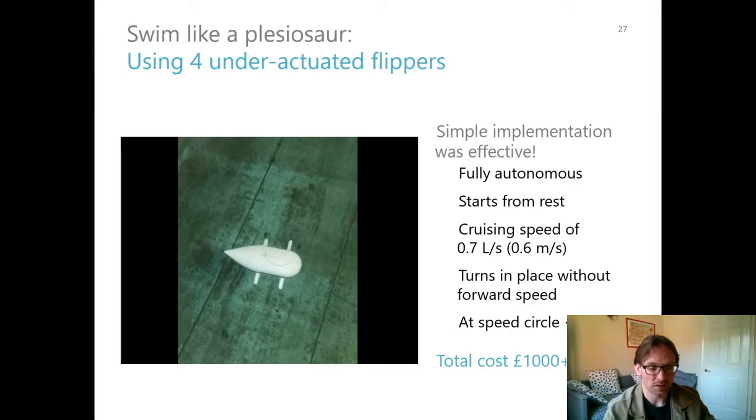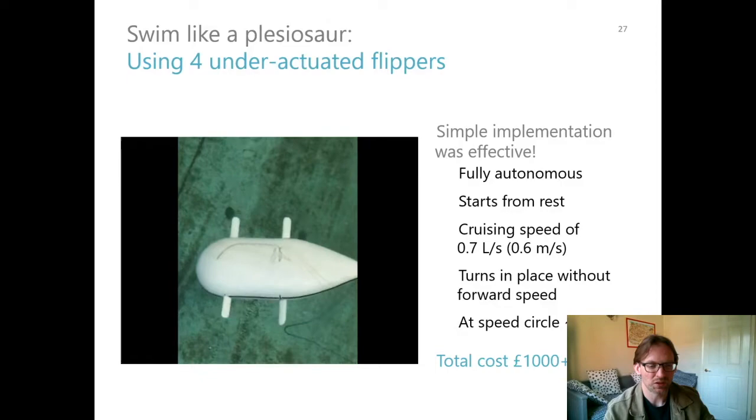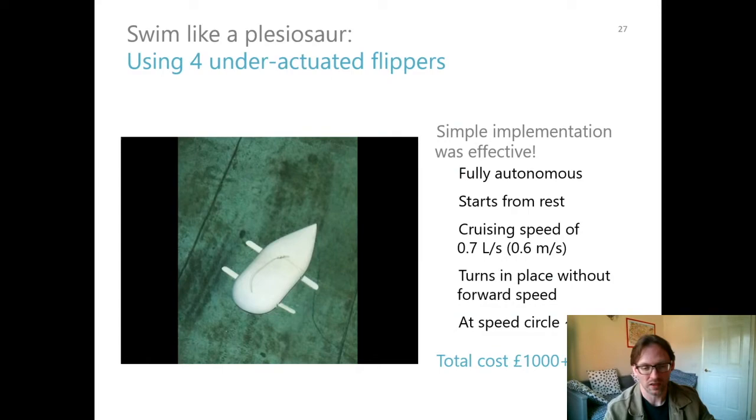And it's able to do this kind of trick, which is very atypical of an underwater vehicle. So it can turn in place without any forward speed. So if you had a camera on here and you wanted to pan left or right, you could do that without losing your shot at all, which is the sort of thing that would be really fantastic for a remotely operated or autonomous underwater vehicle.